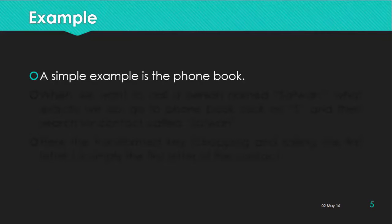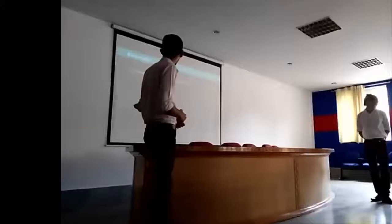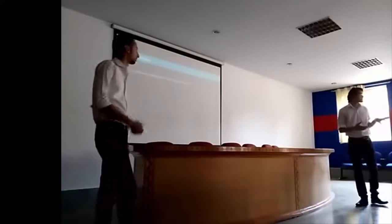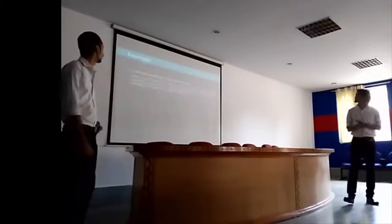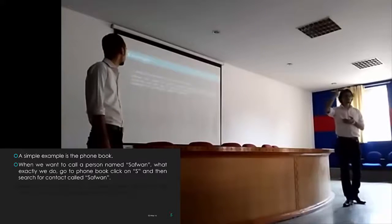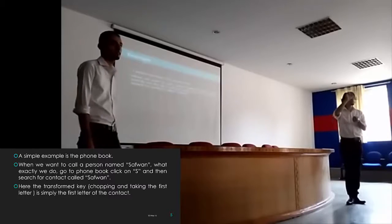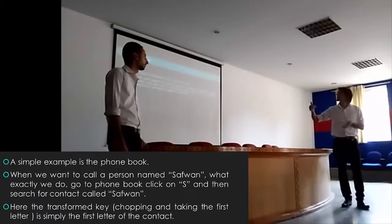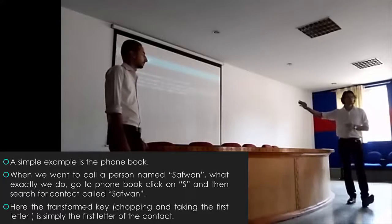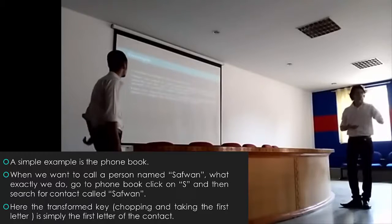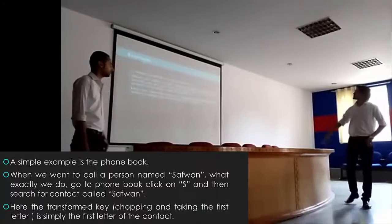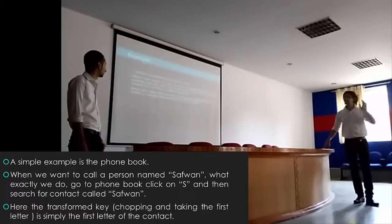A simple example: if you are going to search for information about one of your friends on your phone, you just use the first letter of their name, and then the system starts to look at the first character you have used, based on a special function, in order to give you only the names that start with the letter you used. For example, searching 'Safwan' — the transform key is taking the first letter, and it will show you only the contacts that start with that letter.